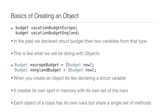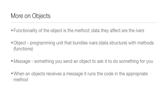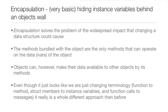A little bit more on objects: the functionality of an object is a method, and the data they affect are the IVARs. An object is a programming unit that bundles IVARs — kind of like the old data structures — with methods, which are what used to be functions. A message is something you send an object to ask it to do something for you, and when an object receives a message it runs the code in the appropriate method.